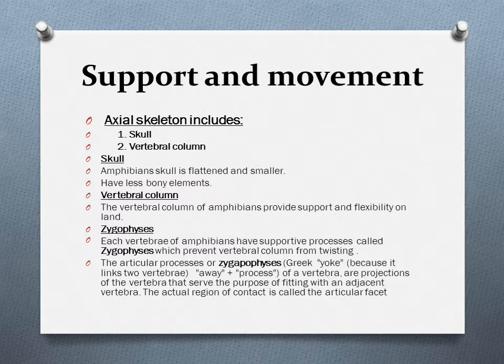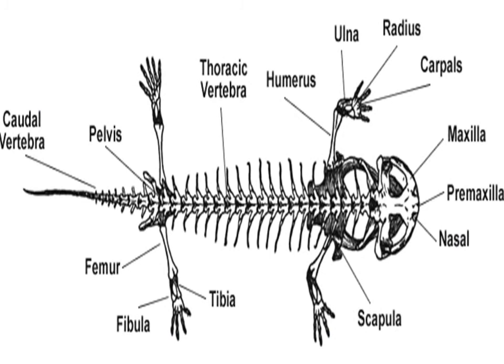The actual region of contact between vertebrae is called the articular facet. The diagram shows the axial skeleton of an amphibian, including the skull and the vertebral column. The skull is flattened, relatively smaller, and has fewer bony elements than the skull of fishes. These features lighten the skull so the body can support it easily. There are also certain changes in jaw structure and musculature, and the vertebral column includes the supportive processes known as zygophysis that prevent it from twisting.